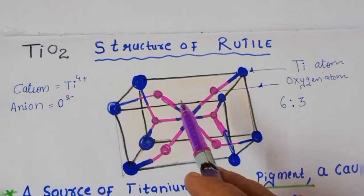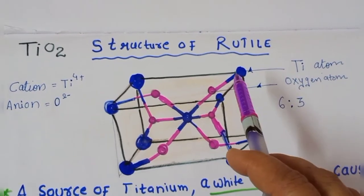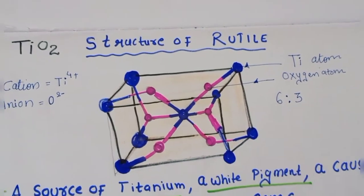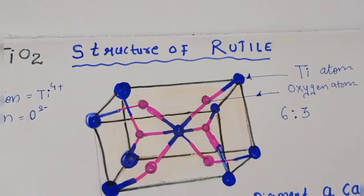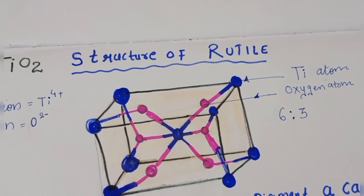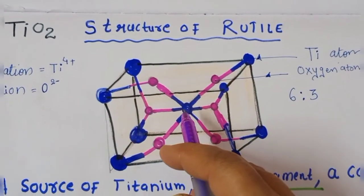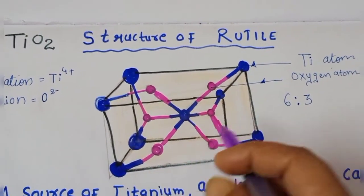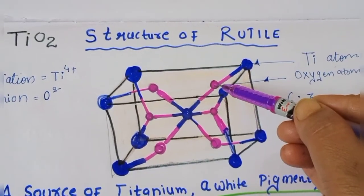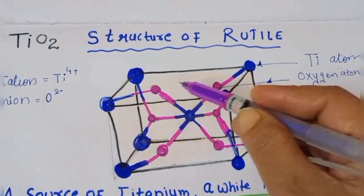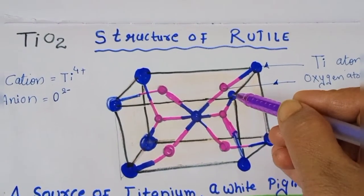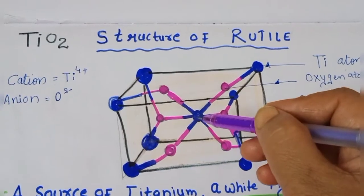In this diagram, titanium atoms are shown in blue and oxygen atoms are shown in pink. In the rutile structure, the coordination number of titanium is six — meaning each titanium ion is coordinated with six oxide ions. Counting the pink atoms: one, two, three, four, five, six — there are six oxygen ions around each titanium.